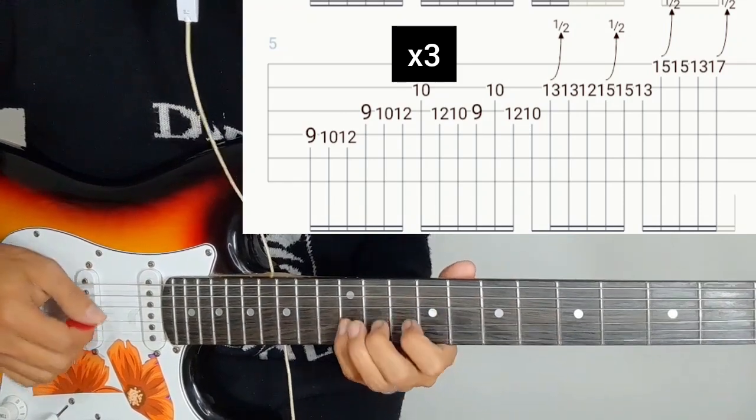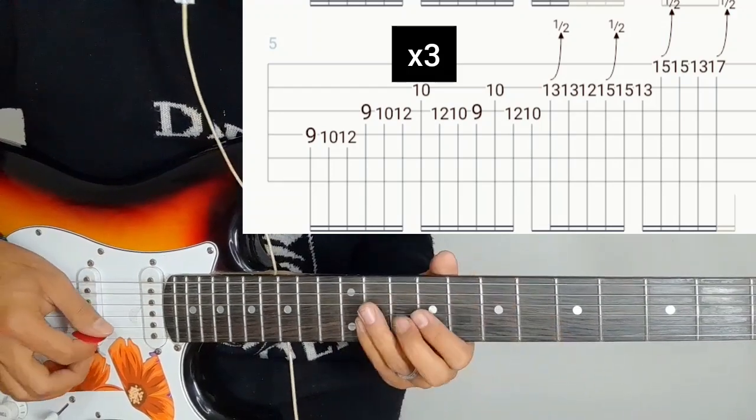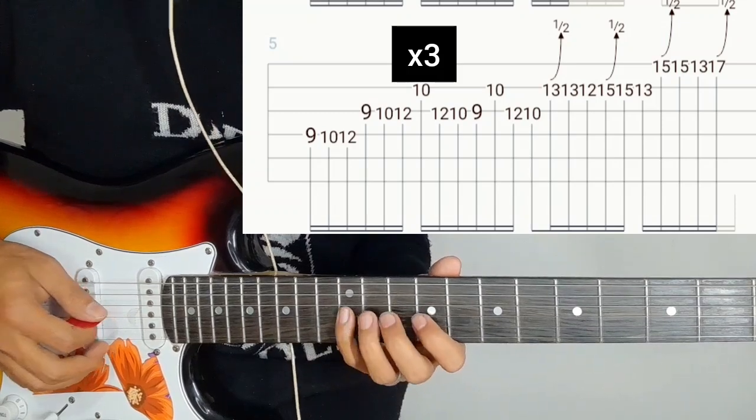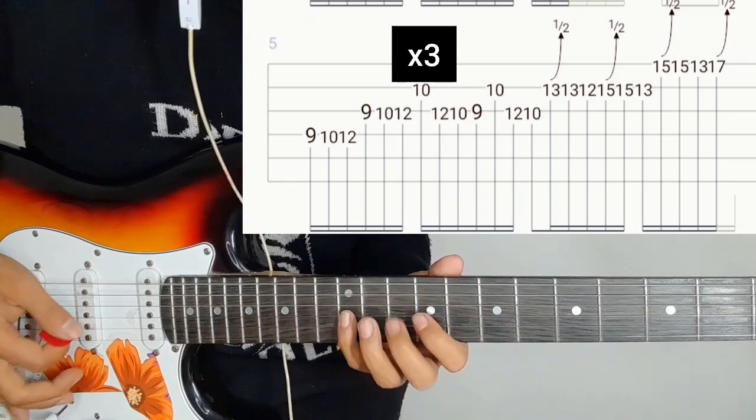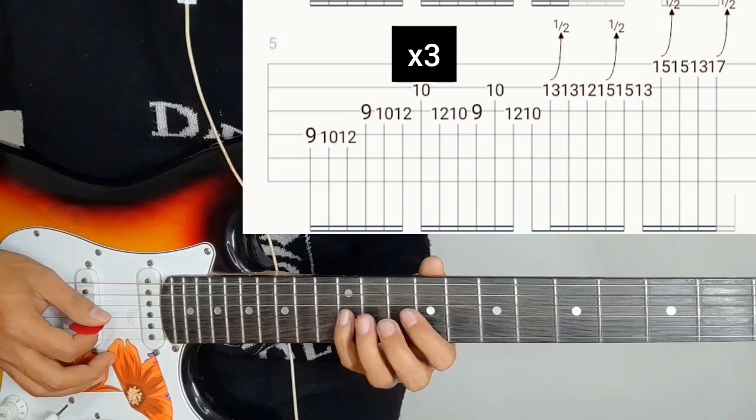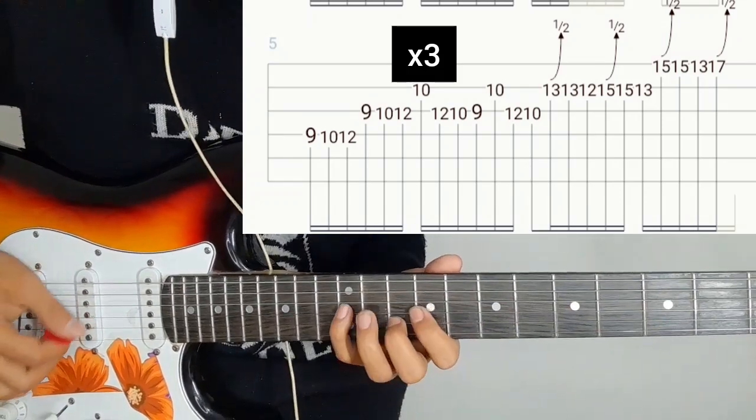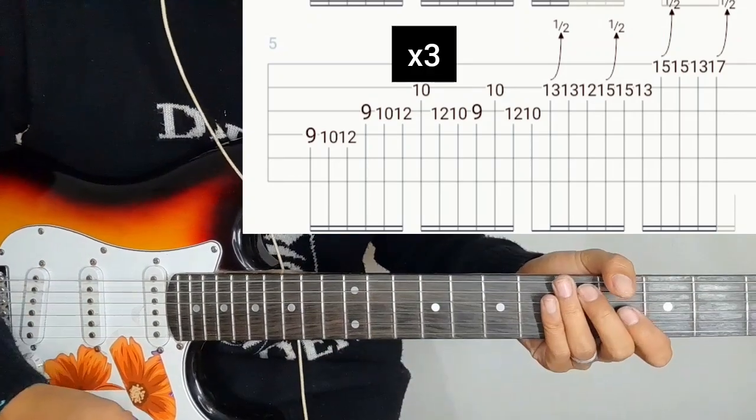4th string 9-7, 4th string 9-9, 4th string 9-10-12, repeat 9-10-12. Then second string 10, 4th string 12-10-9, repeat. Second string 10, 12-10 with bending.